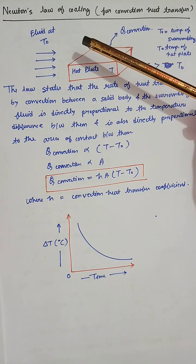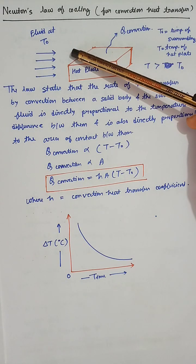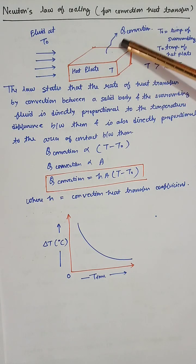The fluid is flowing over the hot plate at temperature T0. Convection is taking place from the hot plate to the surrounding. T0 denotes the temperature of the surrounding, T is the temperature of the hot plate, and T is greater than T0.